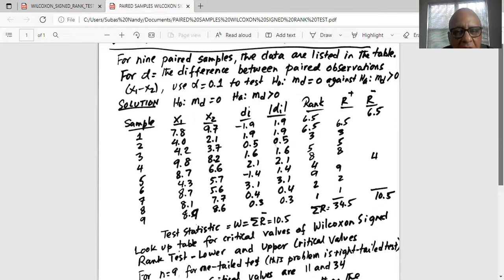And then we rank the absolute differences from the lowest which is 0.3, then 2 is 0.4 rank, then 0.5 rank is 3, then 1.4 rank is 4, 1.6 rank is 5. And then we have two 1.9 so we take the next two ranks 6 and 7, add them together, 6 plus 7 is 13, divide by 2 so the average rank of each of the 1.9 difference is 6.5.